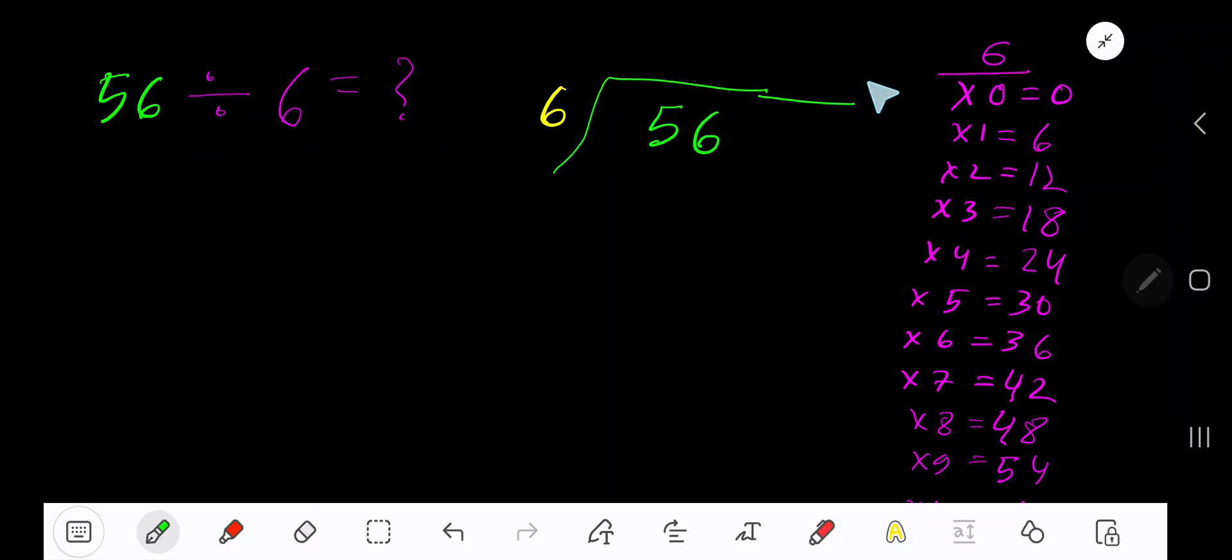56 divided by 6. Here 6 is a divisor, so we need the multiplication table of 6. 6 times 0 is 0, 6 times 1 is 6, 6 times 2 is 12, 6 times 3 is 18, 6 times 4 is 24. This process will continue.